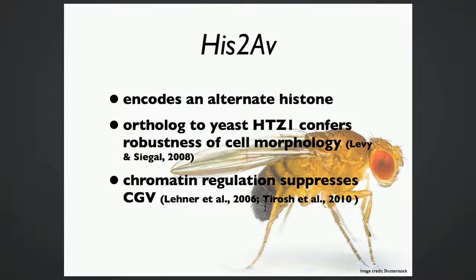It stands to reason that if we perturb His2AV in flies, we should be able to reveal some cryptic variation. However, there are caveats: homozygous mutants do not live past the larval stage, so to look at adult phenotypes we have to look at heterozygous mutants. Furthermore, there currently doesn't exist a true knockout of His2AV that's dominantly tagged so we can track it in heterozygous mutants — so we created our own.